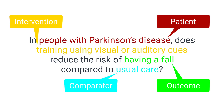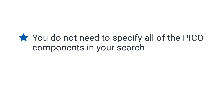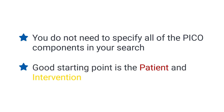We now have four options to choose from to select search terms. But importantly, you do not need to specify all of the PICO components in your search — usually just one or two are enough. A good starting point is to enter terms for the patient and intervention components of your question.